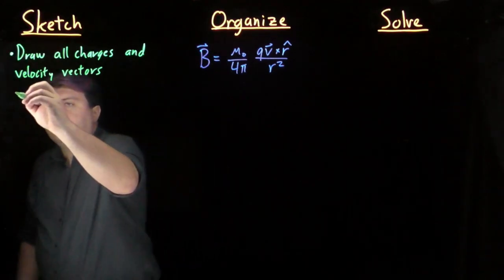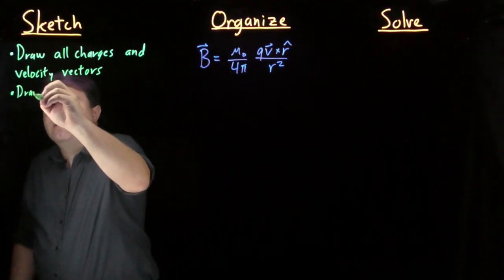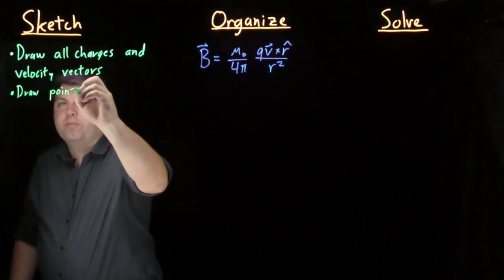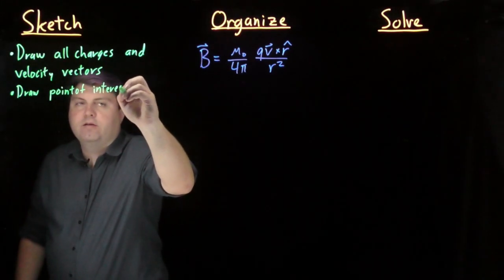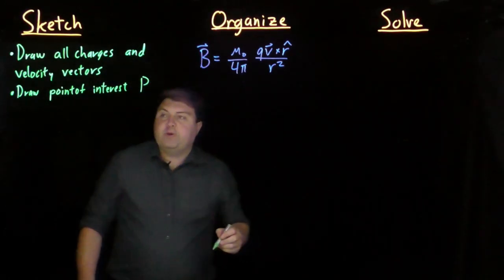Once we have this, we want to then draw the point of interest that we are talking about, and we usually label that with a capital P.